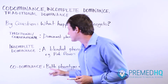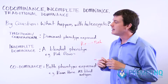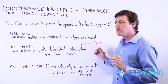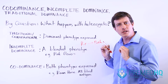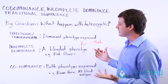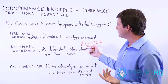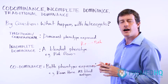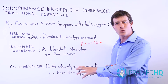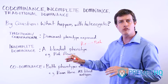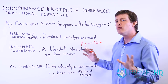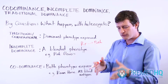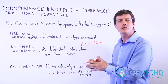Codominance is slightly different. Codominance means that both phenotypes are going to be expressed — rather than a blend, it's an expression of both. One example that deals with red and white is a roan horse. Roan horses have both red and white fur, with parts that are red and parts that are white. Rather than having a blended pinkish fur, it has areas where the fur is red and other areas where it's white.